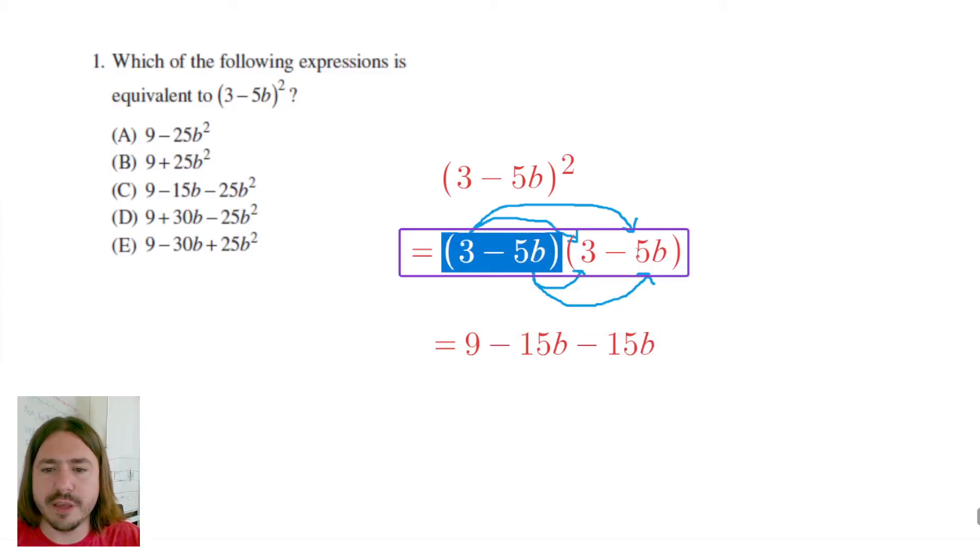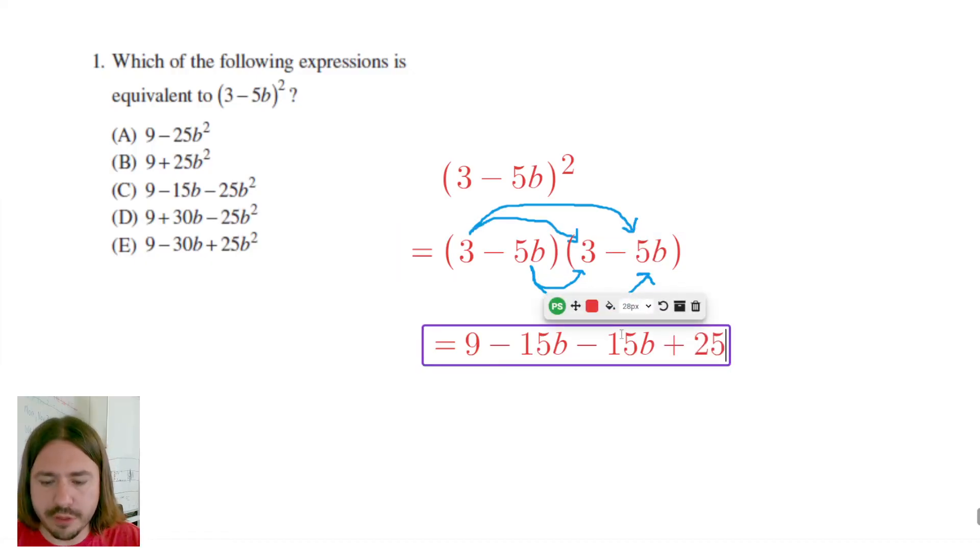And finally, we have negative 5b times negative 5b. Negative times negative is positive. We end up with positive 25b squared.